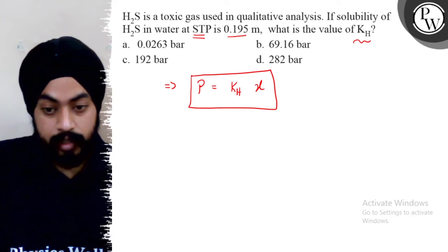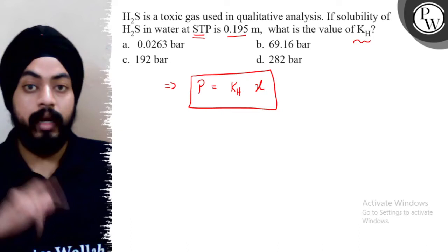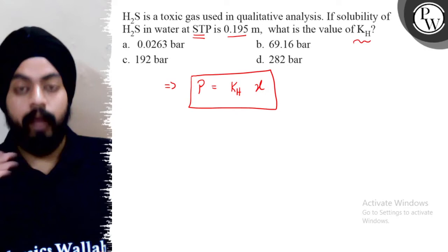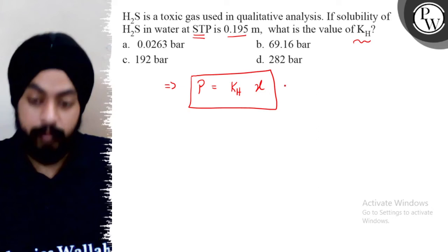Where X is the mole fraction. If you look at KH's unit, then our pressure unit is equal to the unit. How will KH be? If P by X is a pressure unit in atmosphere or bar, and if the mole fraction is unitless, then our KH's unit is equal to bar. So if we look at this form, there is no tension.